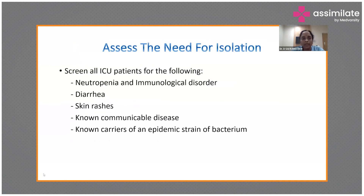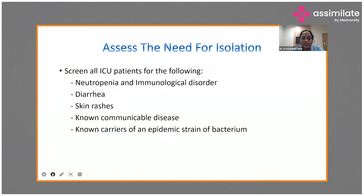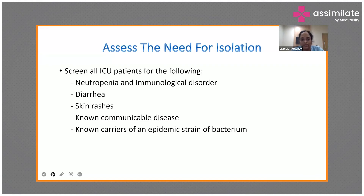Regarding isolation — whom should you isolate? It is humanly impossible to isolate all patients, so you must prioritize. Patients to isolate include those with neutropenia (low WBC/TLC), immunological disease, post-kidney transplant or post-transplant patients, patients with diarrhea, skin rashes, suspected communicable disease, known carriers of an epidemic bacterial strain, and COVID or H1N1 patients.